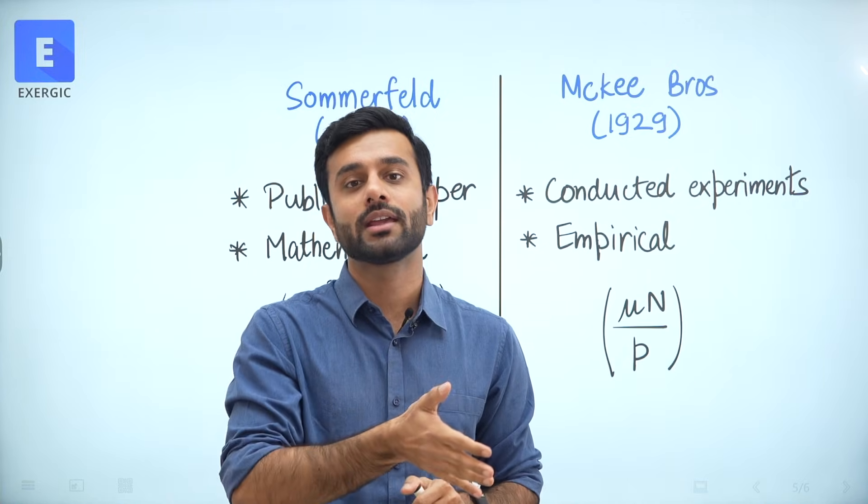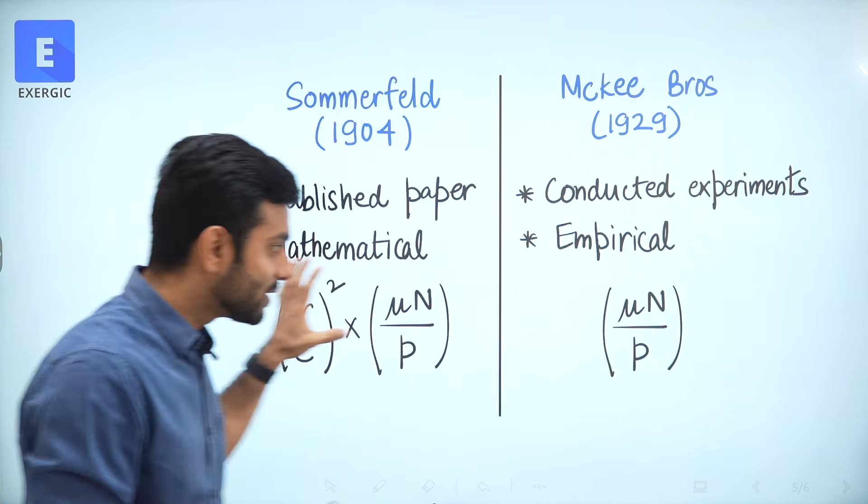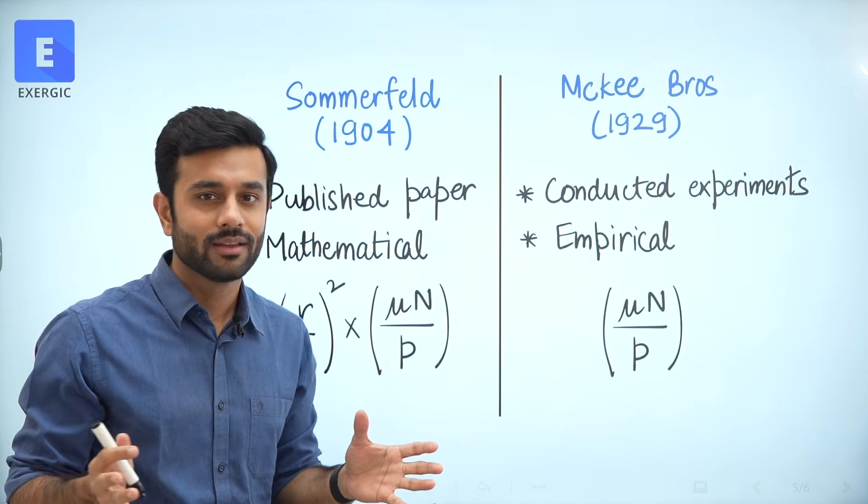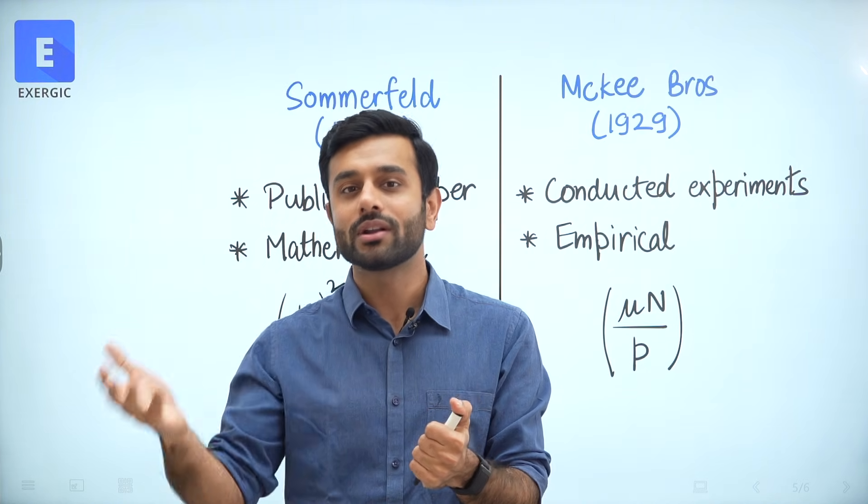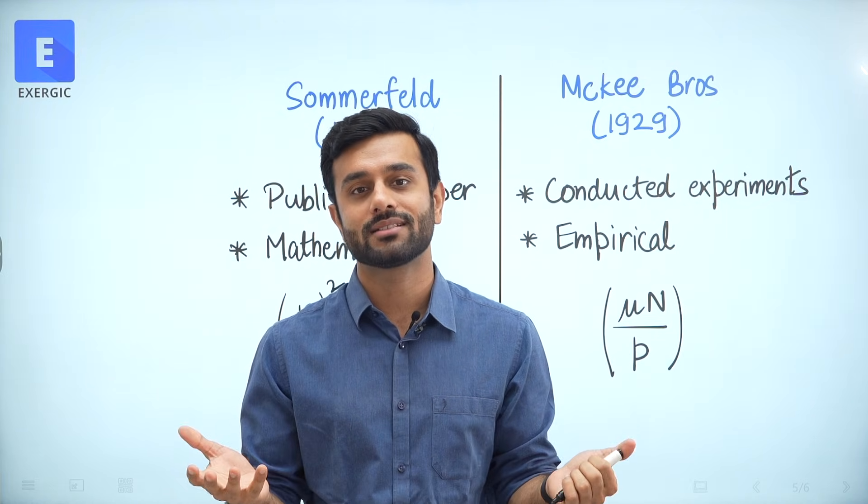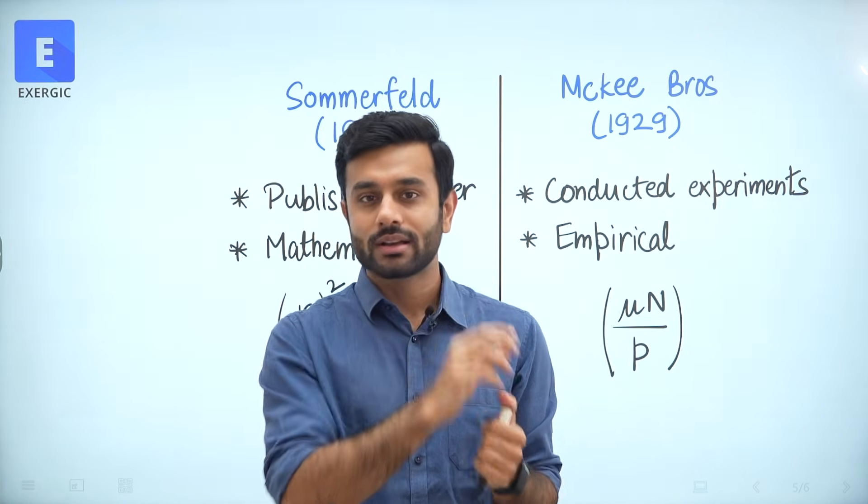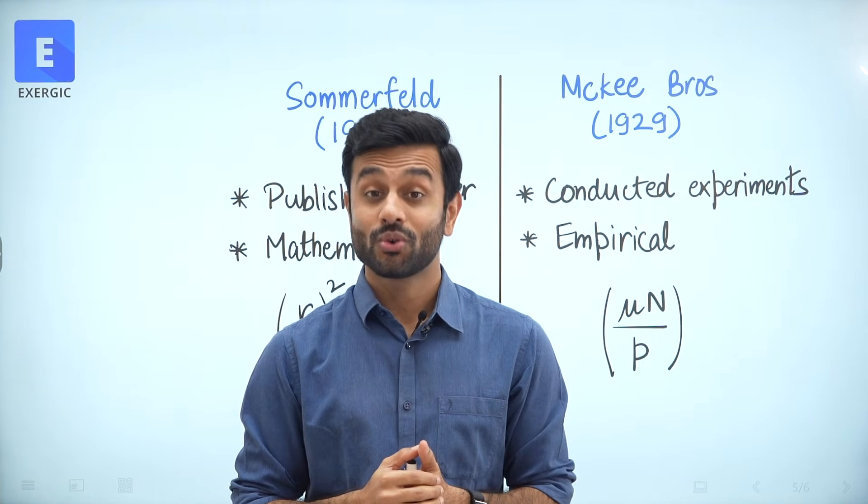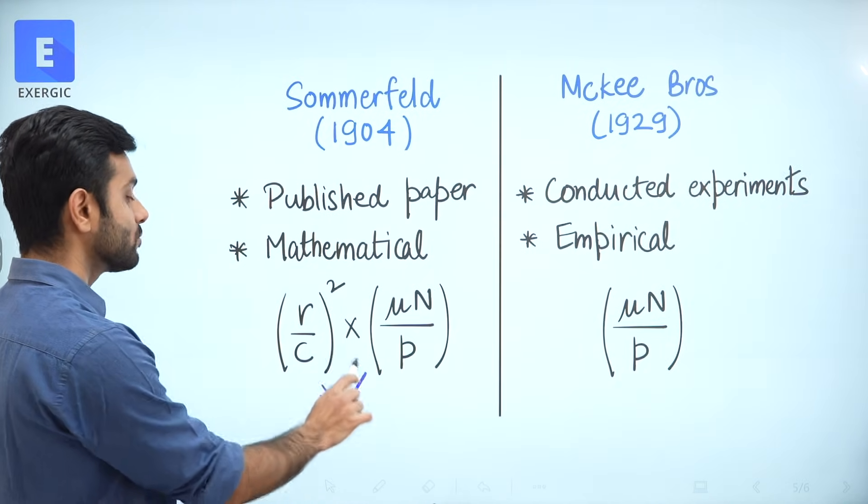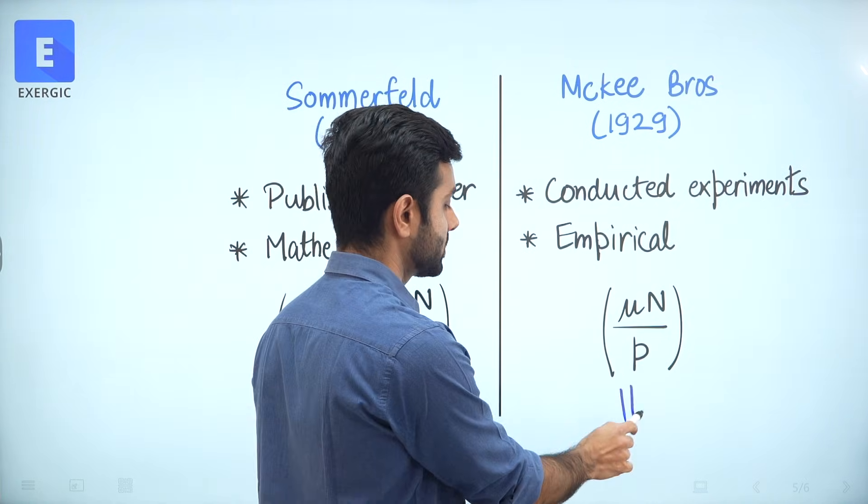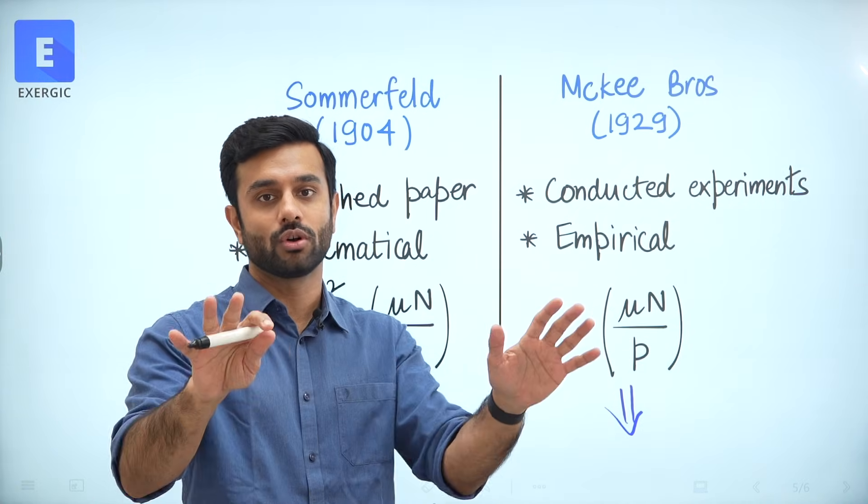Even though it was more accurate, it was very difficult to implement in industries. And hence, industries started using less and less of it. And hence, in books also, this was there, but it never became the industry standard. But this problem was solved 25 years later by McKee brothers. They did not reach the formula using the Reynolds number solutions, mathematical and theoretical. Rather, they conducted experiments. When we conduct experiments, we may arrive upon something which you are not proving essentially, but it works. It's empirical formula.